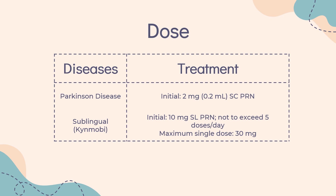Experience with single doses greater than 6 mg, dosing 5 times per day, or total daily doses greater than 20 mg is limited. Sublingual (Kynmobi): initial 10 mg sublingual as needed, not to exceed 5 doses per day. Separate doses by at least 2 hours. If a single dose is ineffective for a particular off-episode, a second dose should not be given for that off-episode. Maximum single dose: 30 mg.